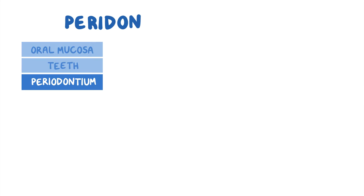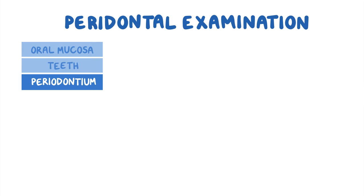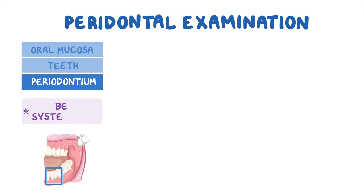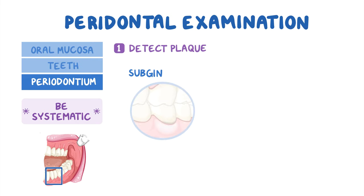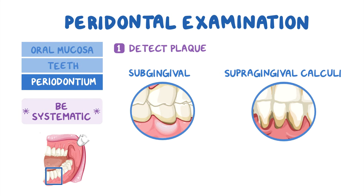Moving on to the periodontal examination, which is the most important part of the diagnostic process. When inspecting the periodontium, it's crucial to be systematic so no areas are skipped. First, it's important to detect the primary cause of periodontitis — dental plaque. Additionally, make sure to note the presence of subgingival calculus and supragingival calculi.